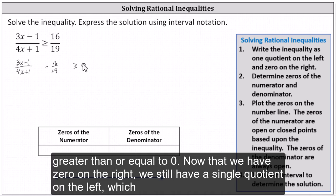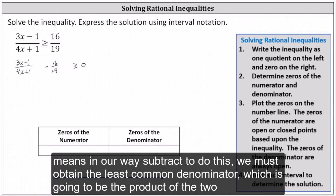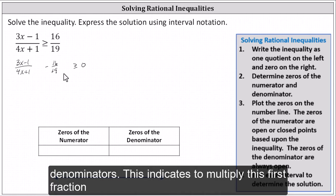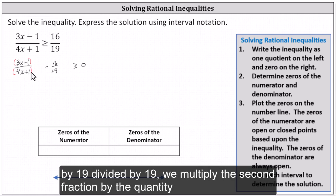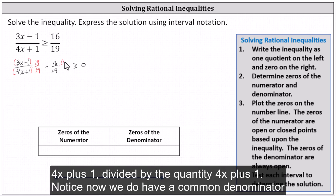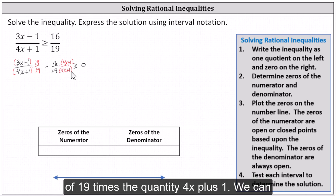Now that we have zero on the right, we still have to have a single quotient on the left. To do this, we must obtain the least common denominator, which is going to be the product of the two denominators. We multiply the first fraction by 19 divided by 19, and the second fraction by the quantity (4x + 1) divided by (4x + 1). Notice now we do have a common denominator of 19 times the quantity (4x + 1).